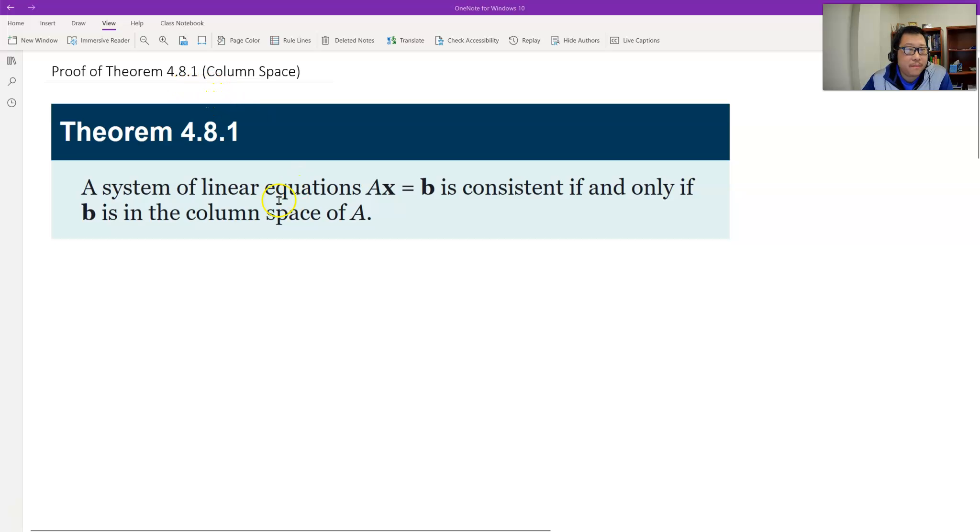We talk about the column space. The theorem says the system of linear equations Ax = b, that's a non-homogeneous linear system, is consistent, equivalent to the constant vector b as in the column space of the coefficient matrix A.